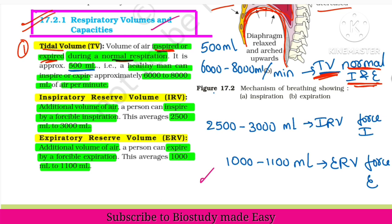So per minute, one respiration — per minute a person inspires or expires around 6000 to 8000 ml of air.